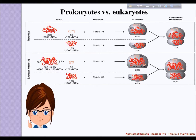Now, comparing prokaryotic versus eukaryotic rRNA: both prokaryotic and eukaryotic ribosomes can be broken down into two subunits. The 'S' in 16S represents the Svedberg unit, and it represents the sedimentation rate related to the length in nucleotides of the respective RNAs, for example in E. coli (prokaryote) and humans (eukaryote).